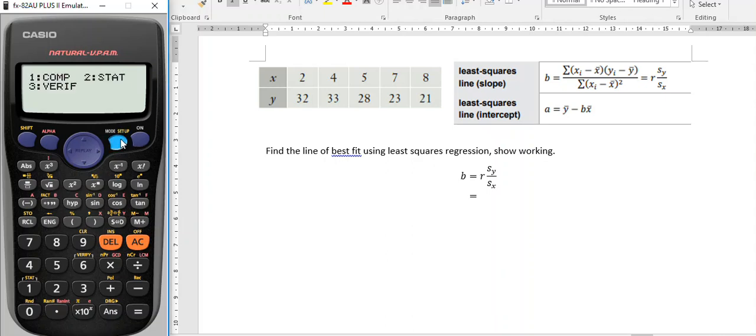So I press the mode key and I go number 2 for stats and a plus bx is the format I need so I can enter some data. So here I go, x value is 2, then 4, then 5, 7, 8, move across to the right, back to the top.